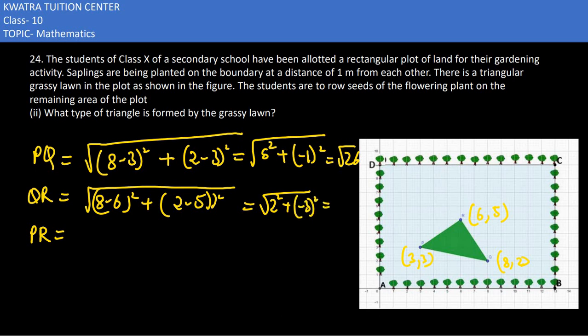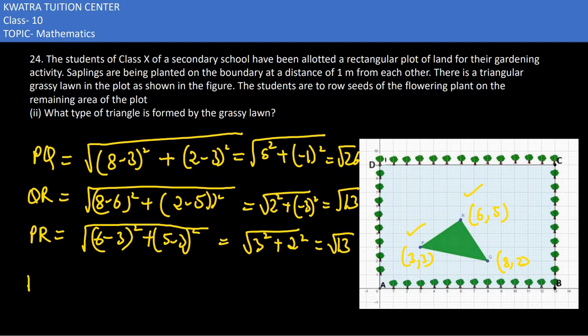8-6 is 2 square, 2-5 is minus 3 square. So 4 plus 9 would be root 13. And PR, you have to use this coordinate and this one, so it's 6-3 whole square and 5-3 whole square. 3 square plus 2 square, that's 9 plus 4, so you get root 13 again.